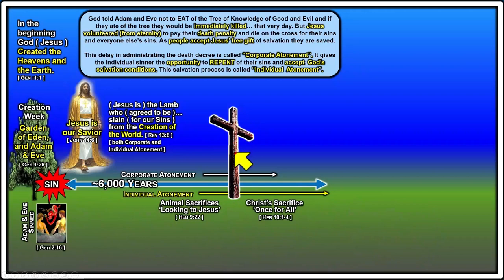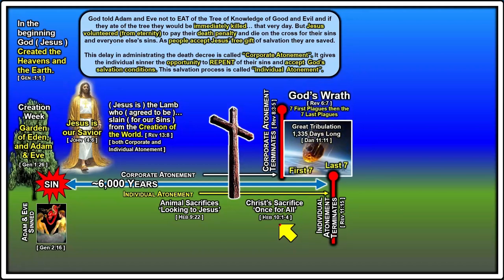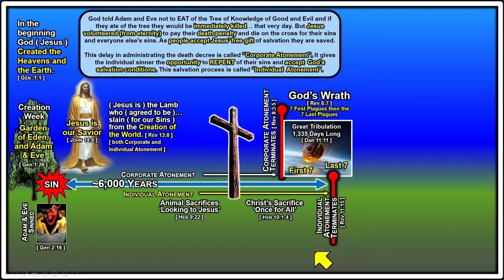After Jesus was sacrificed on the cross, there was no more need for animal sacrifices. Christ's sacrifice, as stated in Hebrews, was once for all time. From the cross onward, animal sacrifices were no longer efficacious. Corporate atonement comes to an end at some point — you can read about that in Revelation 8 — and individual atonement also terminates at a separate point. These points are coming up in the near future: what I'm calling God's wrath released, referred to in Revelation as the great tribulation.